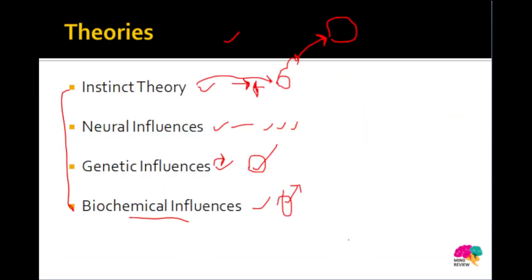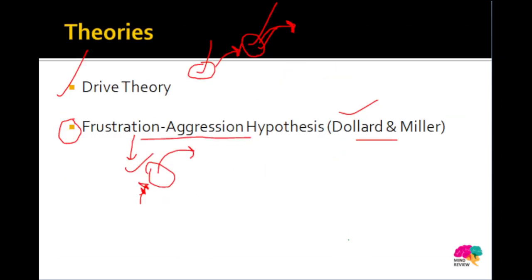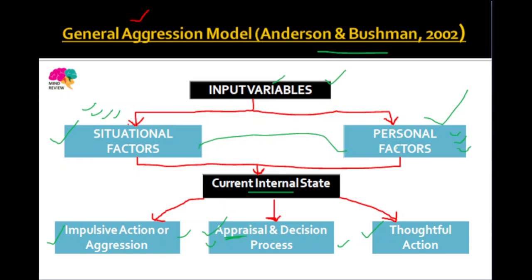The crux of the general aggression model is that our environmental factors and our personality both interact to form input variables, which describe our current internal state — our emotions, cognitions, decisions, and arousal. These are the very important theories related to aggression. I hope these are clear, especially the frustration-aggression hypothesis by Dollard and Miller. If you have any doubts, please put them in the comment section.